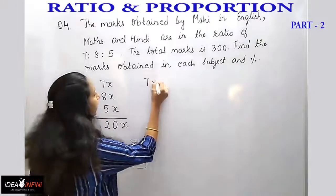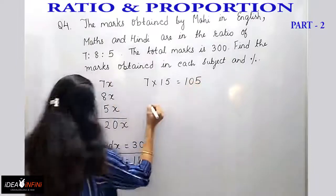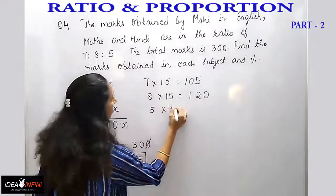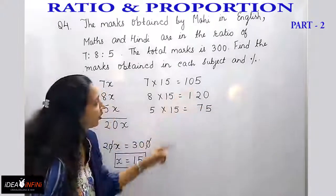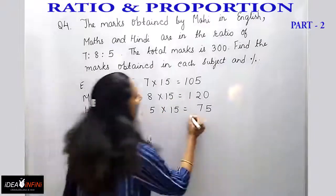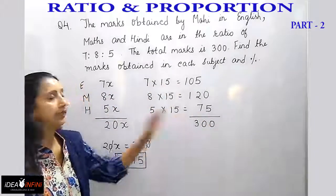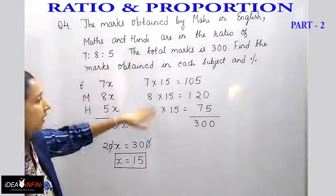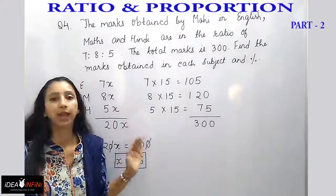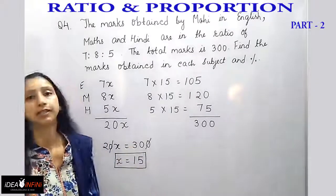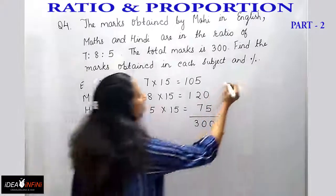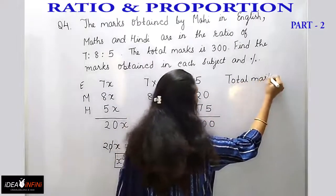Calculating: 7 into 15 is 105 for English, 8 into 15 is 120 for Maths, and 5 into 15 is 75 for Hindi. Checking the total: 120 plus 105 is 225, plus 75 is 300 — correct. To find Mahi's overall percentage, we also need the total marks. Assuming the total marks are 600.